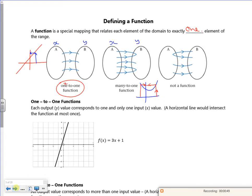So one-to-one, x to y. Many-to-one, x to y, so more than one x value goes to one y value. And that one's all over the show, so that was not a function.